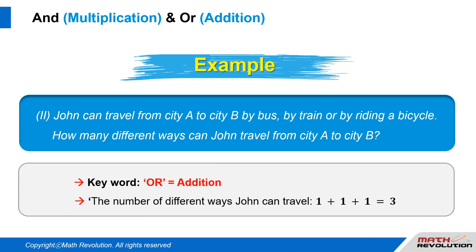The keyword is the word OR, which connects different modes of transportation. OR stands for addition in such questions. So, the number of different ways John can travel is 1 plus 1 plus 1, which equals 3.